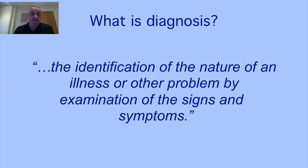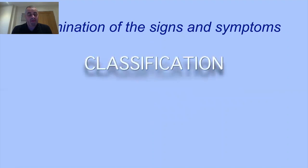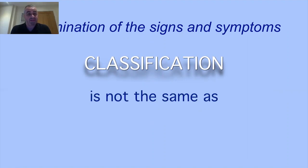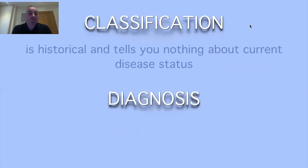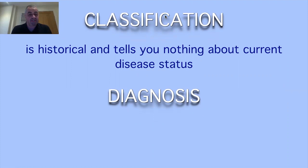We need to do a little bit of background. When we think about making a diagnosis, we are identifying the nature of an illness or problem through examination of signs and symptoms. We do our assessment, special tests, and come up with our diagnosis. What the World Workshop produced was a classification system, and a classification is not the same as a diagnosis — a diagnosis puts more meat on the bones.